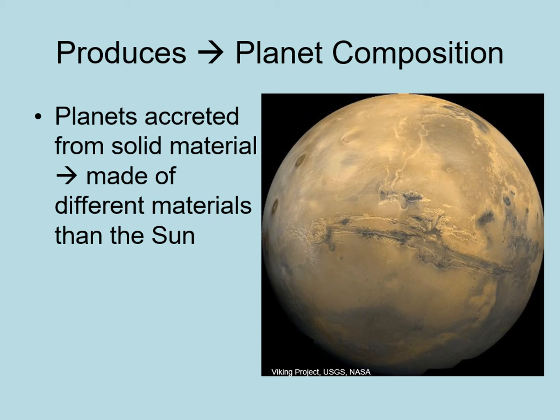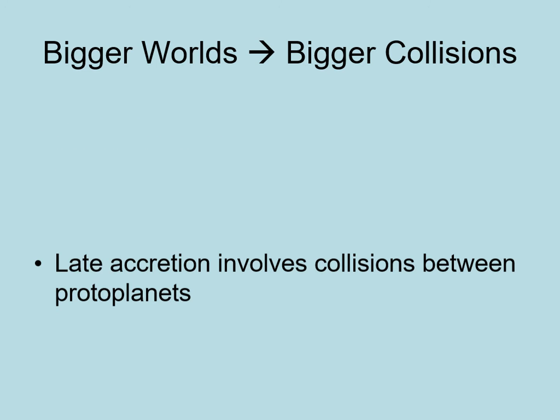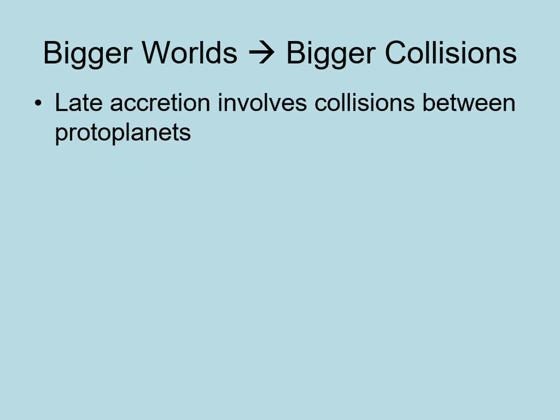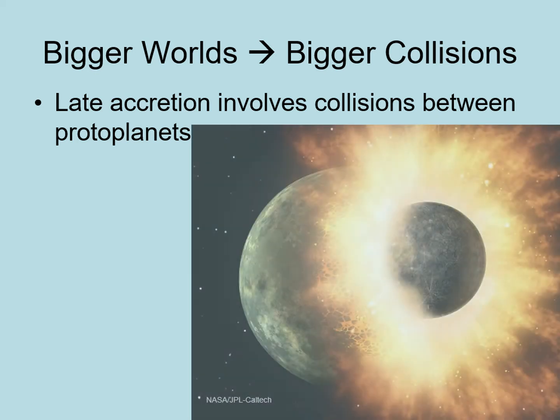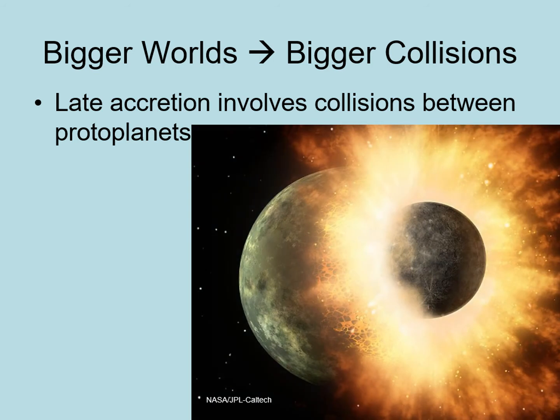But first, we've got to look at one other result of solid body accretion. As we described earlier, the late stages of planet formation involve collisions between large protoplanets. Often, the last few collisions in these simulations are big ones — collisions between planet-sized bodies. There can be only a few collisions like this, and each one will be a unique event. Sometimes they'll be dead center, other times they'll be glancing blows.